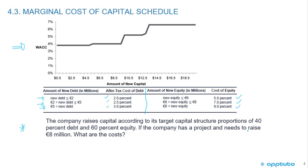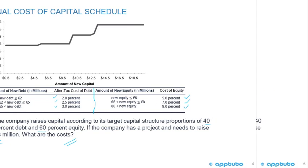The company raises capital according to its target capital structure of 40% debt and 60% equity. If the company needs to raise 8 million euros, we take 8 million times 40%, giving 3.2 million in debt. Since 3.2 million is between 2 million and 5 million, the after-tax cost of debt is 2.5%. Then 8 million times 60% gives 4.8 million in equity, and since 4.8 million is less than or equal to 6 million, the cost of equity is 5%.